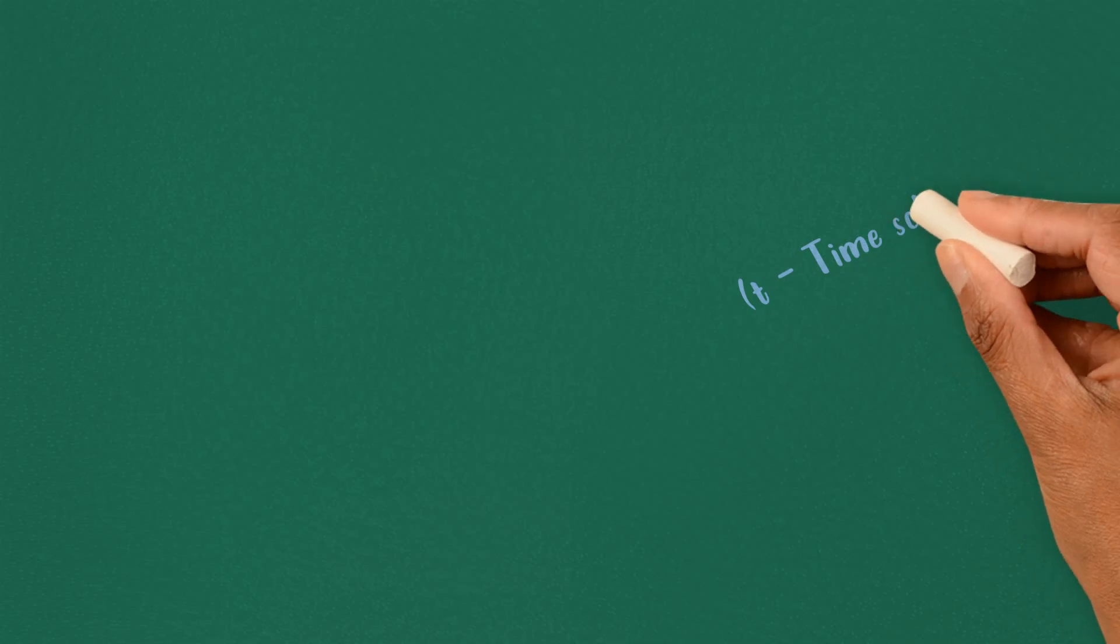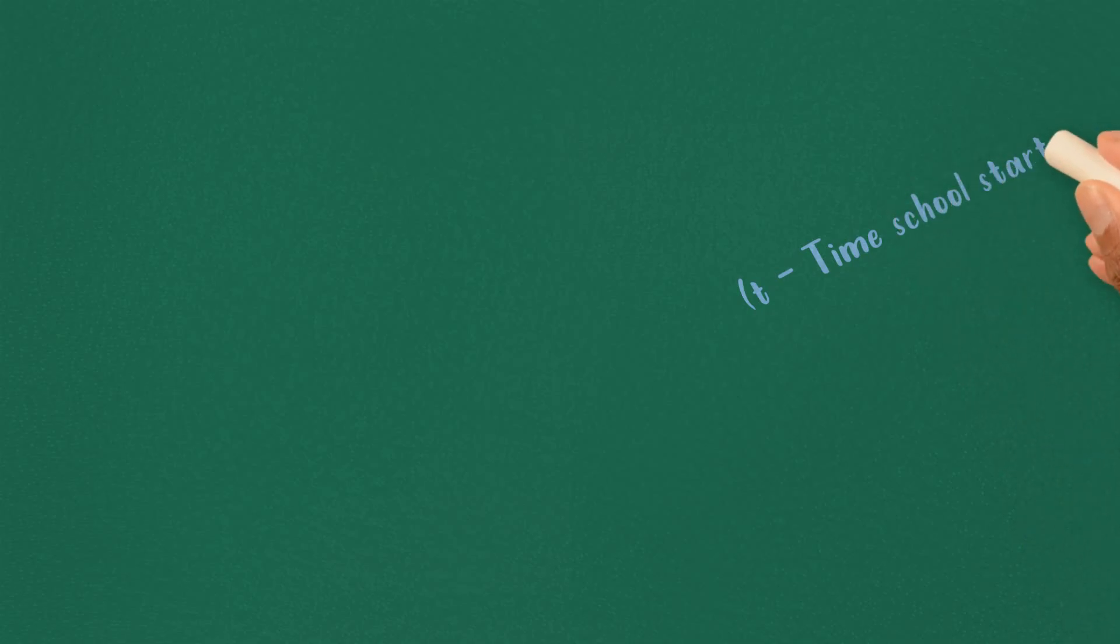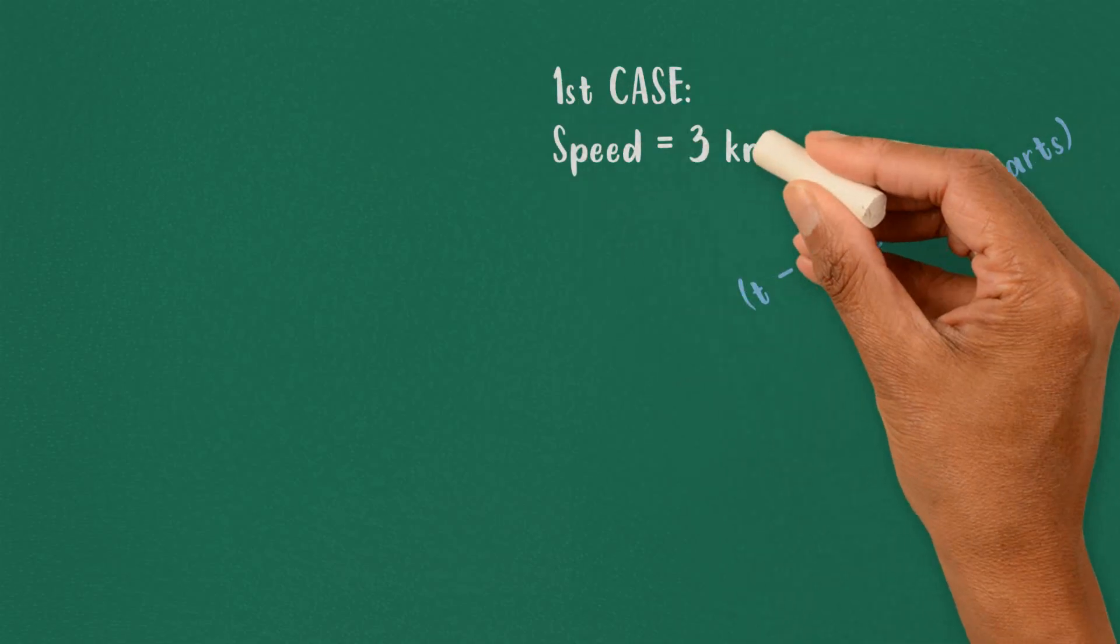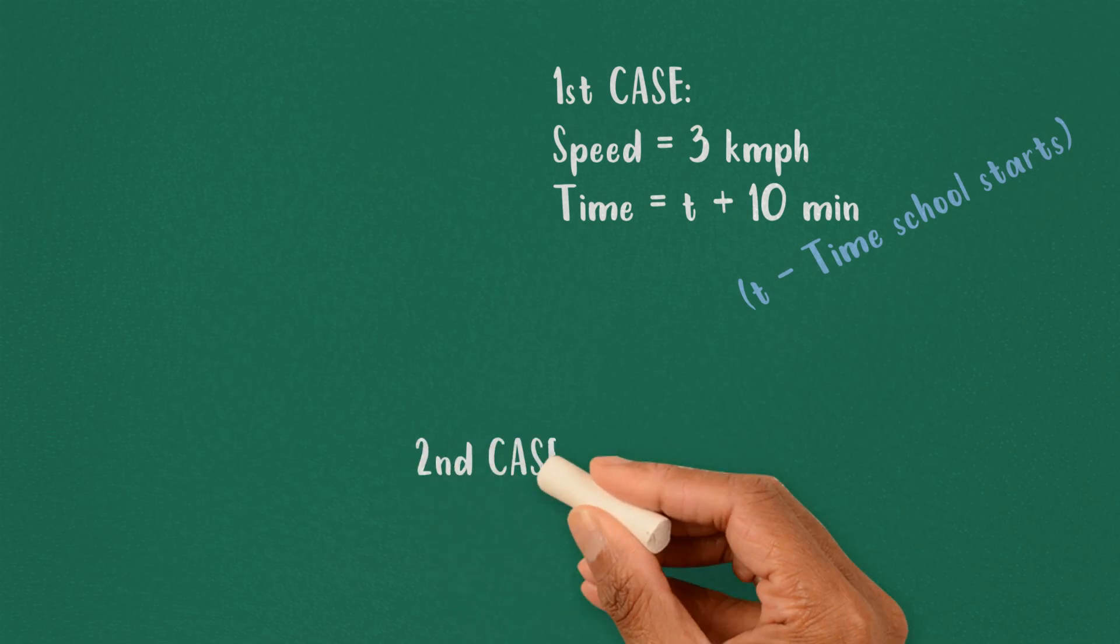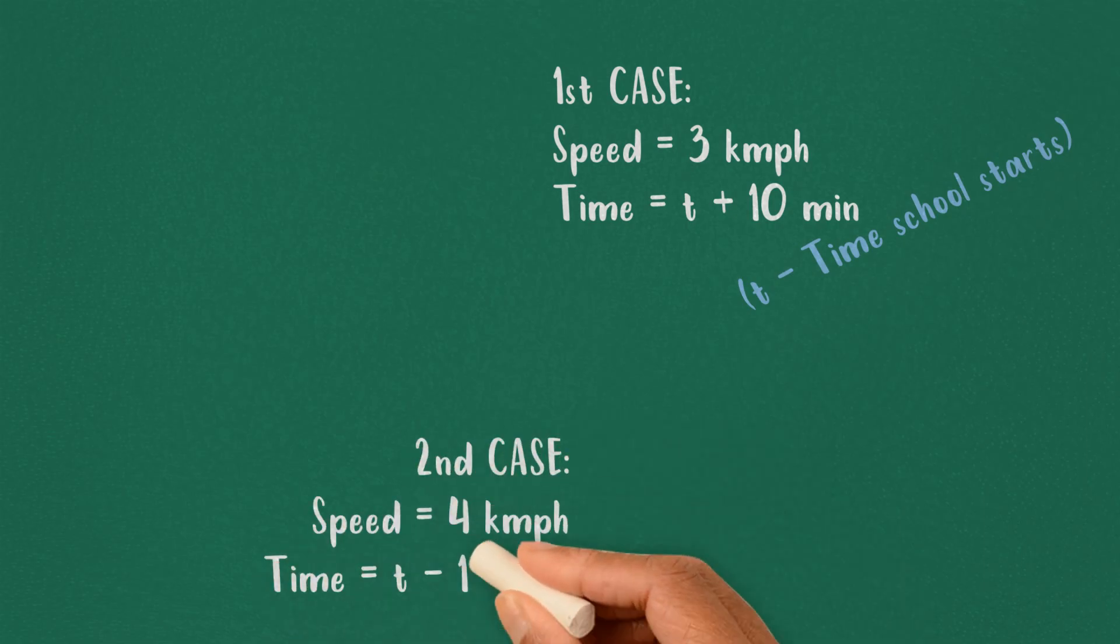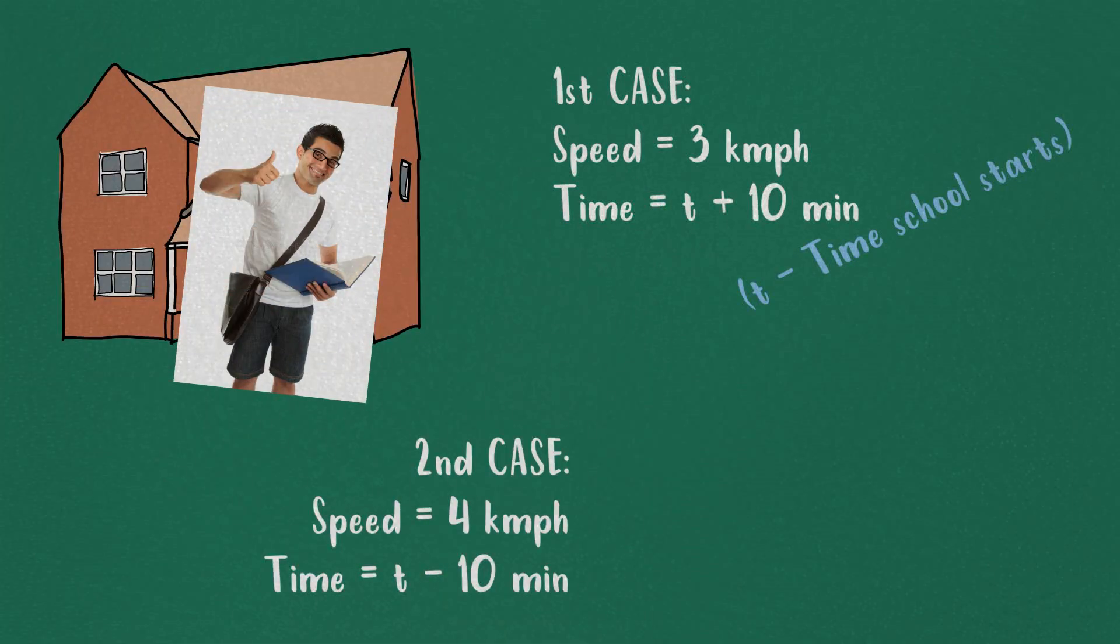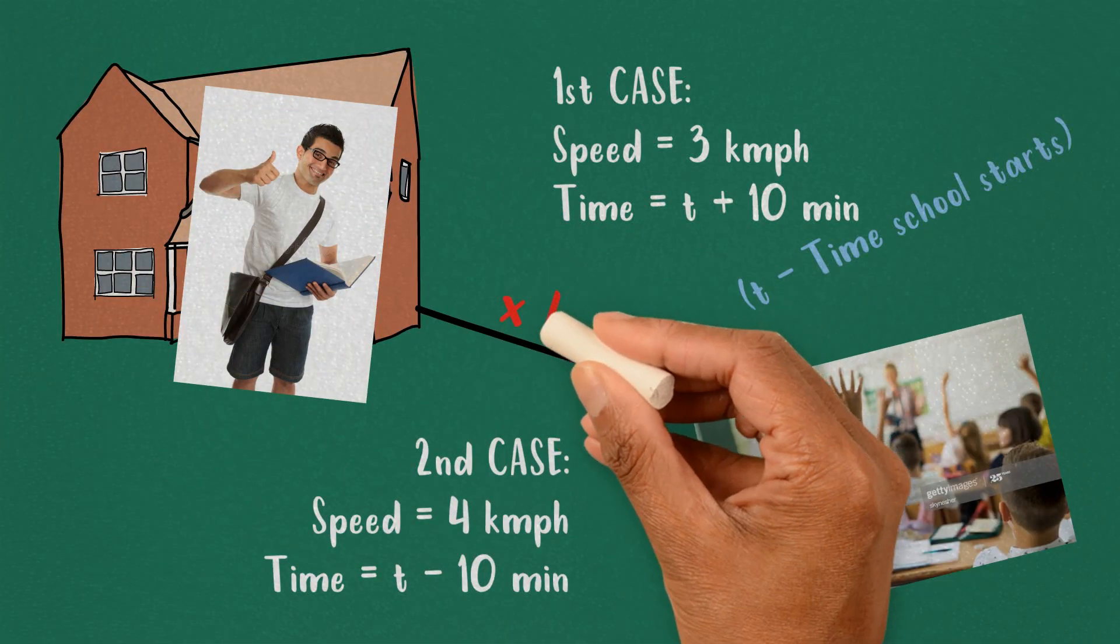Let t be the time the school starts. In the first case, walking speed is three kilometers per hour and time is t plus ten. In the second case, speed is four kilometers per hour and the time is t minus ten. Now let x be the distance from his house to his school.